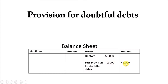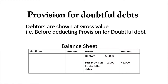At the time of dissolution of partnership firm, debtors are shown at gross value, or debtors are transferred to realization at gross value — that is before deducting provision for doubtful debt. So if you can see the balance sheet here, this 50,000 is a gross value and when you deduct 2,000, this 48,000 is a net value. So when you are preparing realization account, you need to remember that debtors are transferred at gross value, which is before deducting provision for doubtful debt.